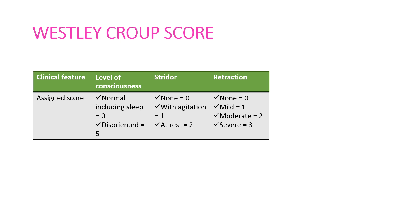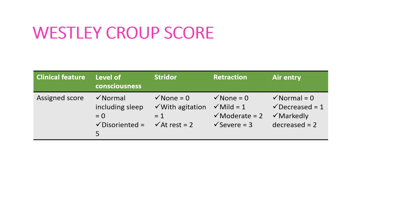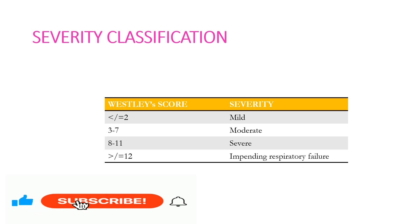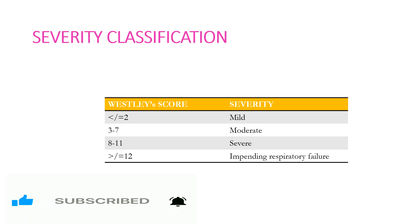Continuing the Wesley Croup Score: air entry normal scores 0, decreased scores 1, markedly decreased scores 2. Cyanosis: none scores 0, with agitation scores 4, at rest scores 5. Classification: mild croup if total score ≤2; moderate if score is 3–7; severe if score is 8–11; impending respiratory failure if score is ≥12.